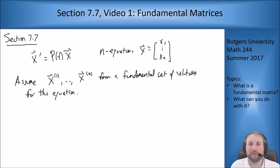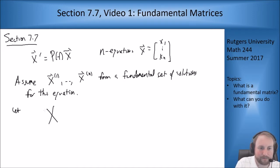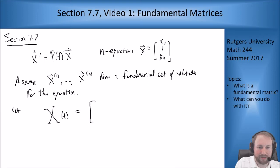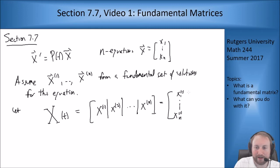Before, when we took the Wronskian, we did that by stacking all these solutions into a matrix and then taking a determinant. Now we're going to set up that matrix again. Let X(t) be the matrix with all of them stacked together — x₁ in the first column, x₂ in the second, and xₙ in the last. So the entries run from x₁₁ in the top-left to x₁ₙ in the bottom-left, over to xₙ₁ in the top-right and xₙₙ in the bottom-right.